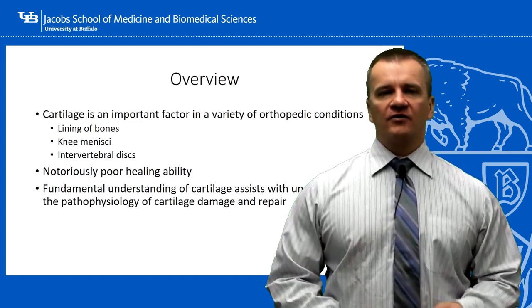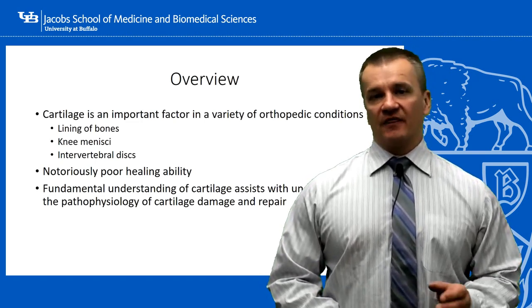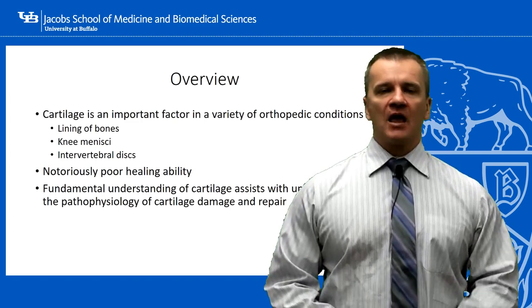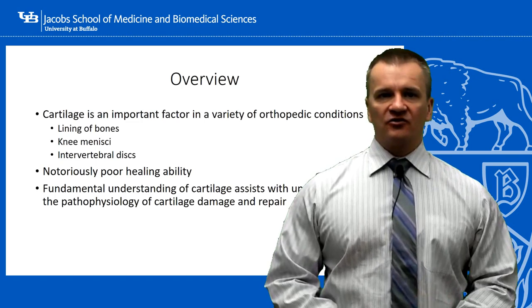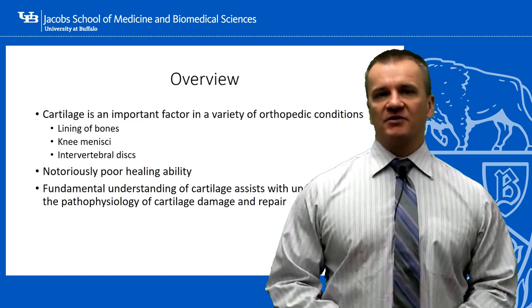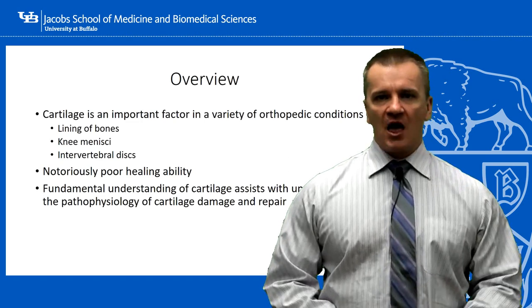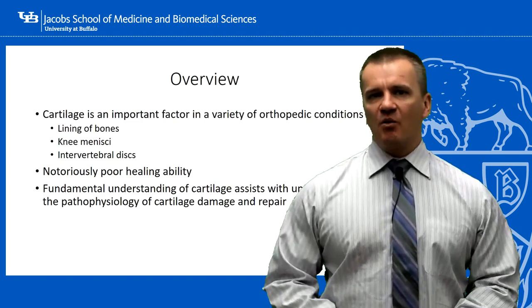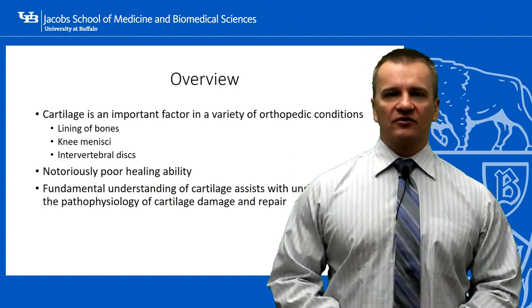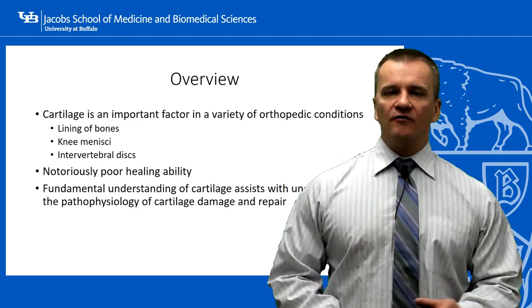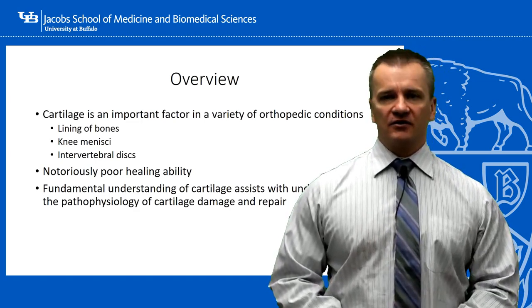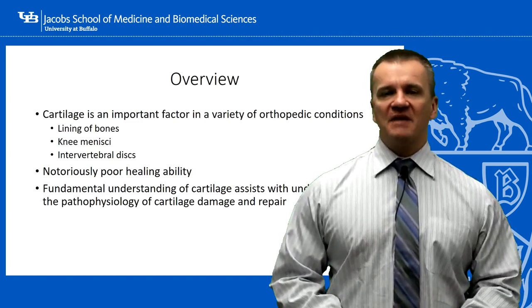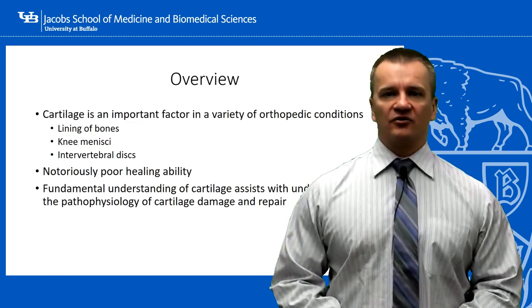There's actually a lot of diversity in cartilage tissue depending on the type and the location. There's hyaline cartilage lining the bones of synovial joints, the meniscal pads within the knee joints, and fibrocartilage that makes up the intervertebral discs. All of these have importance in different orthopedic conditions. One of the things that all forms of cartilage have is fundamentally weak healing abilities, which of course has major implications with orthopedic surgery.